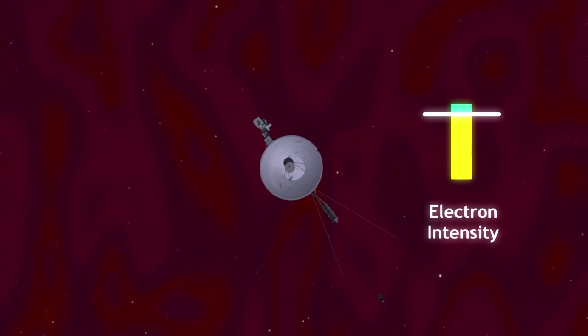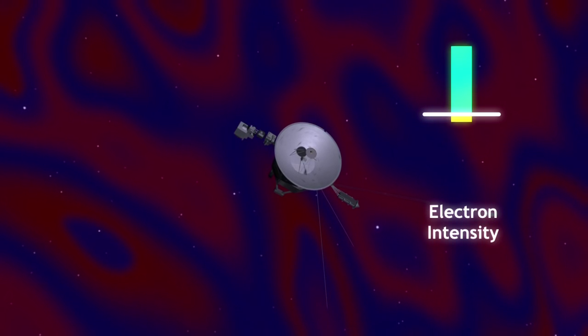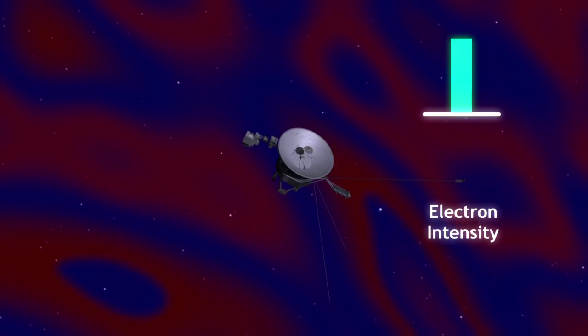When it is in the region, Voyager 2 sees many trapped cosmic rays and electrons. When it is out of the region, the spacecraft sees fewer.